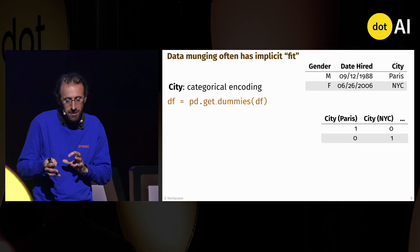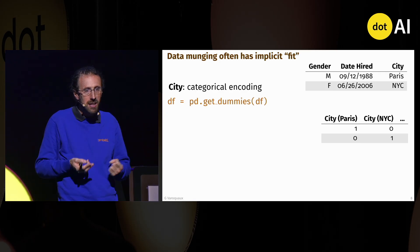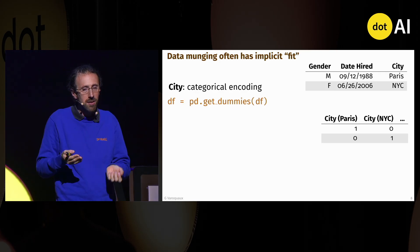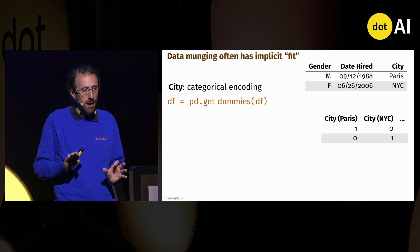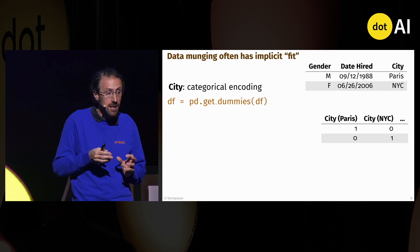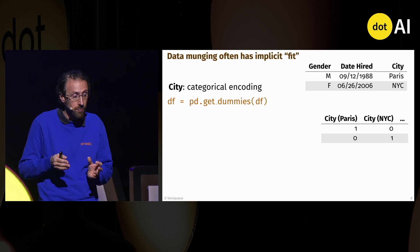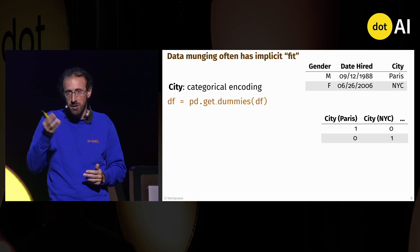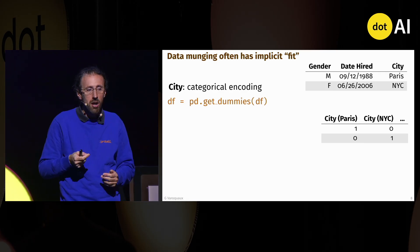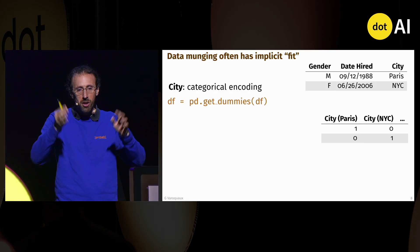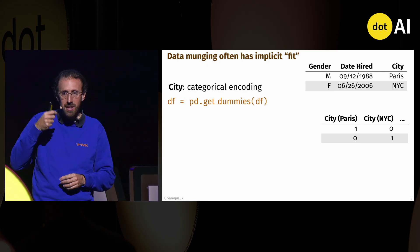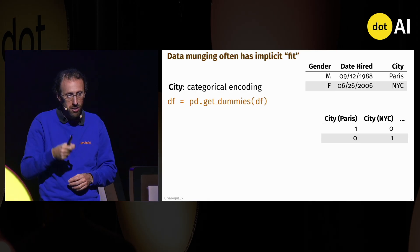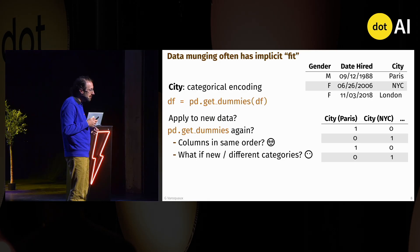One reason it's challenging is that data preparation has implicit fits — it adapts in some way to the data. For instance, think about the categorical encoding we did. We called pandas.get_dummies, and what it does is create one column per city — one-hot encoding.